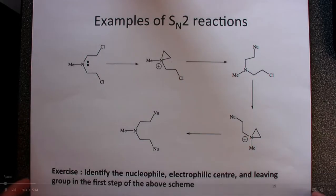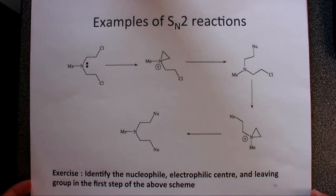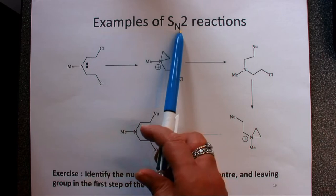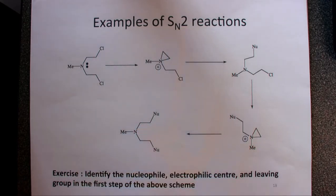Hopefully you've had a chance to try this exercise. It's an example of an SN2 reaction, so when you see that, you should be thinking about where's the nucleophile, where's it going to attack, where's the leaving group. Remember that the nucleophile will attack at the same time as the leaving group departs through a transition state.